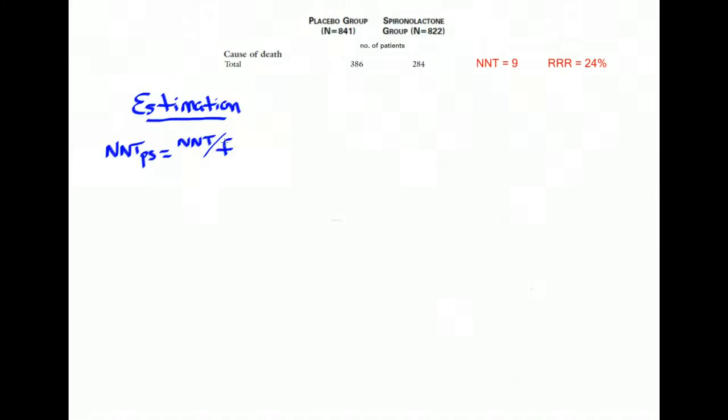And what F reflects is your estimate of how more or less likely it is that your patient is to develop the outcome than the placebo group of patients in the study. So if you feel your patient is two times more likely to develop the outcome, F will be two. If you feel your patient is half as likely to develop the outcome, F will be 0.5.